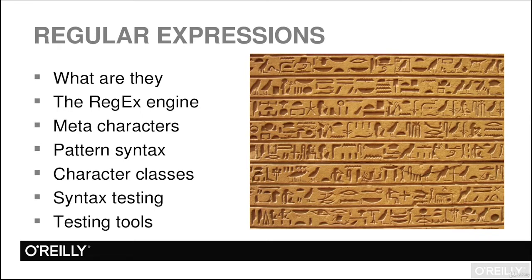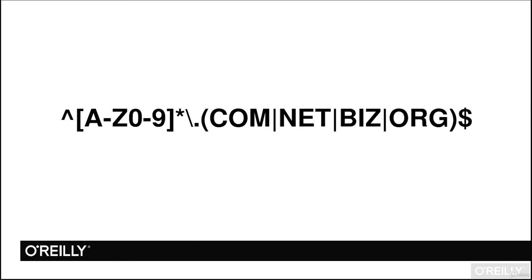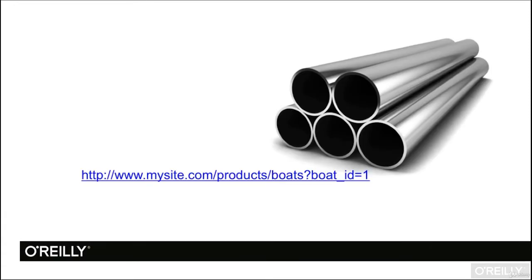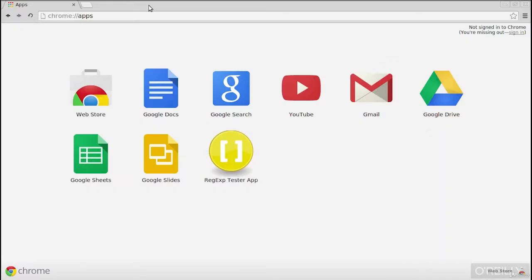If you've ever seen regular expressions, they might look cryptic — sort of like hieroglyphics. The way the Perl-compatible regular expression engine works is analogous to characters being dribbled out of a pipe, one character at a time. We'd start with a URL like http://mysite.com/products/boats?boatID=1 and dribble a character out one at a time, analyzing each against a pattern. I've installed an extension in Chrome called the Regex Tester app. Let's open it and look at an example.